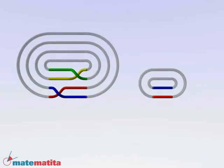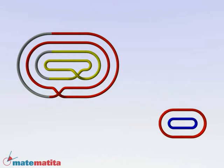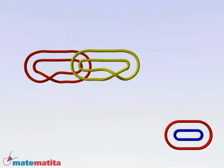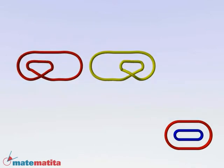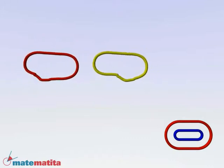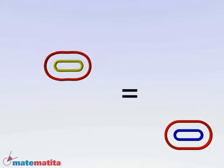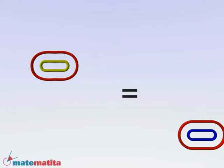Alexander's theorem ensures that we can obtain any knot as the closure of a braid. But two braids can be very different and still give the same knot. For example, they don't even need to have the same number of strands. So the question now is: given two arbitrary braids, do they give the same knot once they are closed?